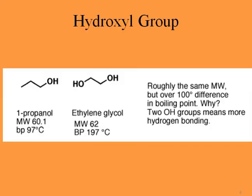The hydroxyl group increases boiling point temperature significantly, so increasing the number of hydroxyl groups raises it even further. For example, comparing 1-propanol and ethylene glycol — glycol means two or more hydroxyl groups — 1-propanol has one hydroxyl group and a boiling point of 97°C, while ethylene glycol, with two hydroxyl groups, boils at 197°C. They have roughly the same molecular weight but over a 100-degree difference in boiling point, because two hydroxyl groups means more hydrogen bonding.